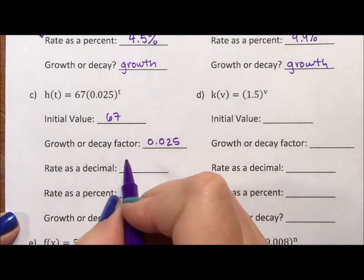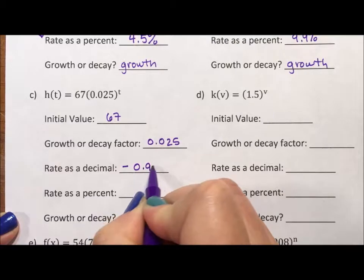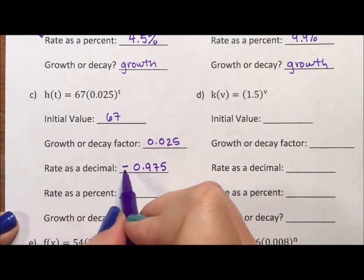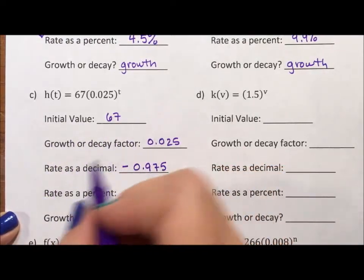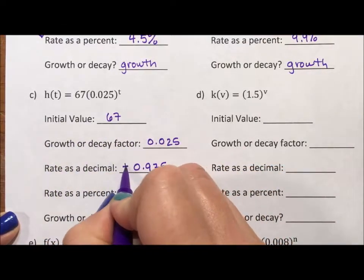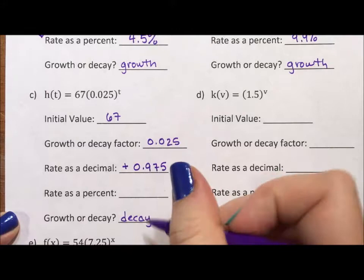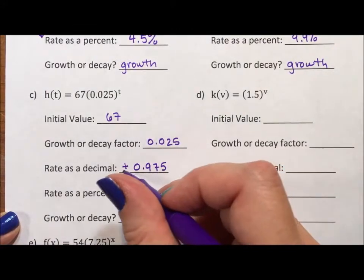When we subtract 1, we get negative 0.975. Now, that negative is not a number I normally write, but when we subtract, we'll get a negative. What I do is I usually just make it positive. That negative tells me it's decay. When you subtract 1, if you get a negative, it means it's decay, but then the word decay takes over this negative, and you don't need the negative.